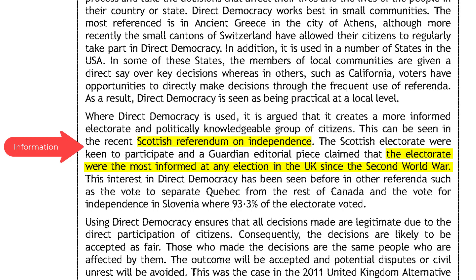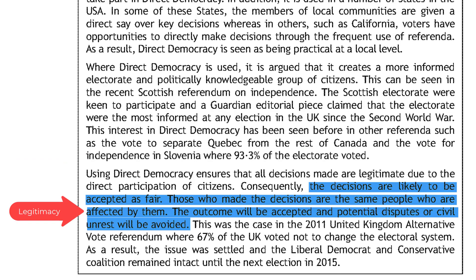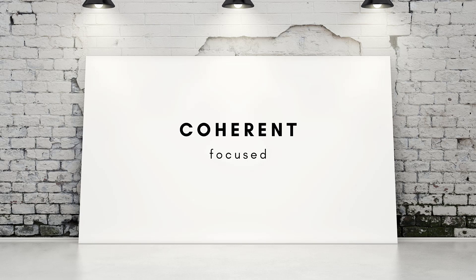I would then switch to yellow — the colour for information — and select the words 'the electorate were the most informed at any election,' along with the example of the Scottish referendum on independence. Switching to blue — the colour for legitimacy — I will select: 'The decisions are likely to be accepted as fair, those who made the decisions are the same people who are affected by them, and the outcome will be accepted and potential disputes or civil unrest will be avoided.' While this feels like a laborious process, this is where the bulk of the time should be spent so that your written response is coherent and focused.